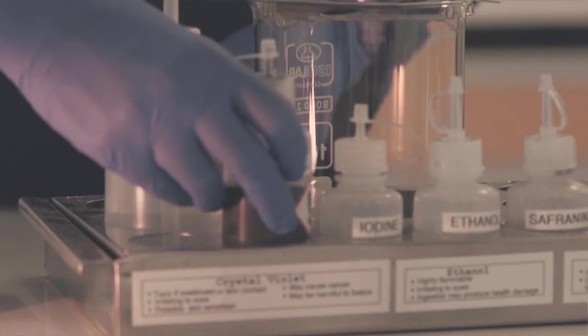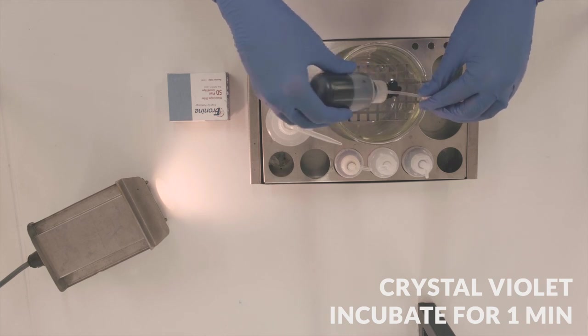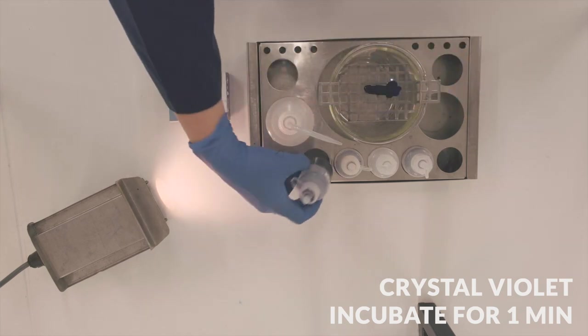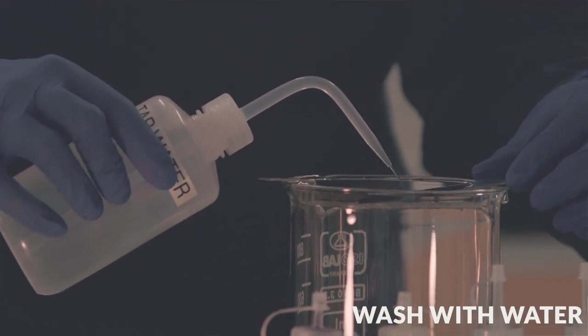Apply crystal violet to the fixed sample and incubate for one minute. This covers the top layer of both types of bacteria in a deep purple color. Wash off any excess crystal violet with water. Apply the water from the top of the slide and let it run down.